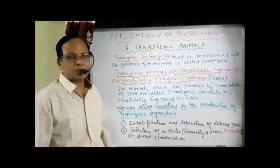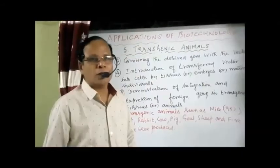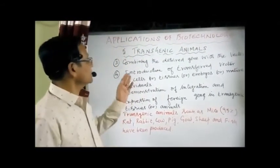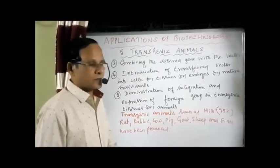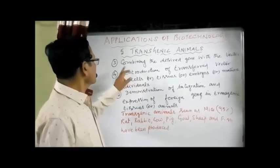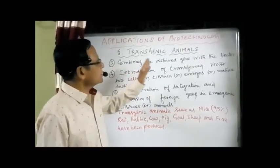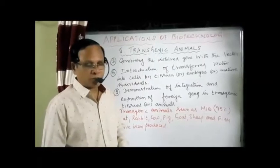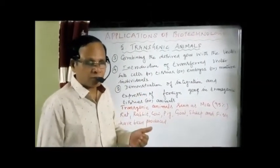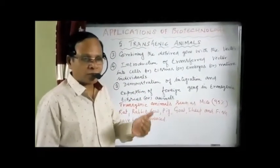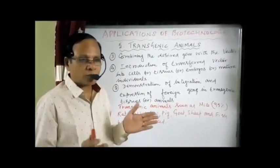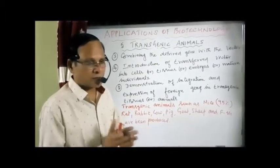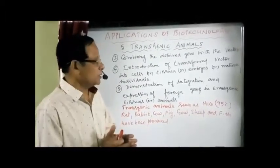If no vector is available, direct transmission is used — that is, microinjection of a desired gene directly into the egg cell — so that we can get an individual by development to produce a desired transgenic organism. The next step is combining the desired gene with the vector. We already separated the desired gene and selected the vector; now we combine both.